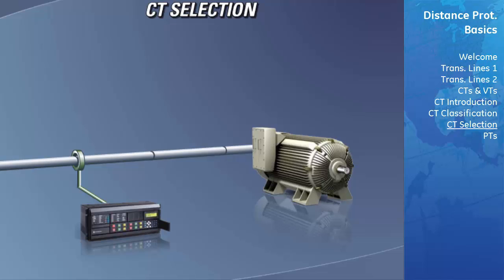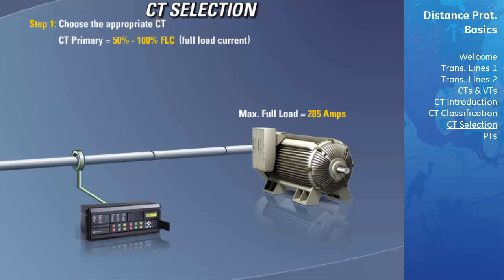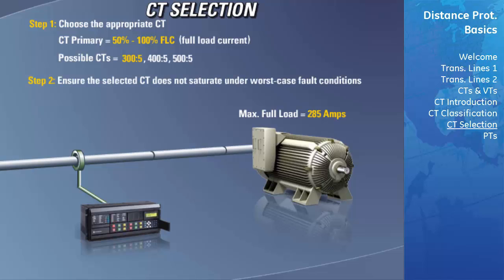Let's assume we have a motor that draws a maximum full load current of 285 amps. The first step is to choose the appropriate CT. It is customary to select a CT with a primary rating falling between 50 to 100% of the maximum full load current of 285 amps. Possible CTs would be 300 to 5, 400 to 5, and 500 to 5. We would select the CT closest to 100% — the reason is that the higher the CT ratio is over the full load current, the less sensitive the CT will be. Since accuracy is always imperative, we select a CT with a 300 to 5 amp conversion, where the primary rating of 300 is closest to the 100% primary rating. If that CT saturates under worst case fault conditions, a higher ratio CT such as the 400 to 5 may need to be chosen.